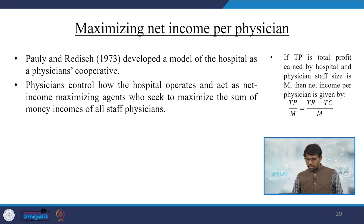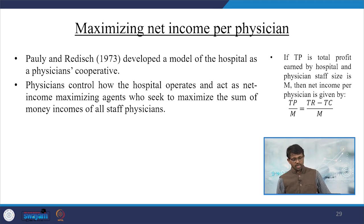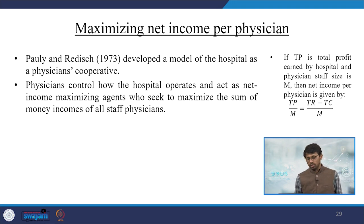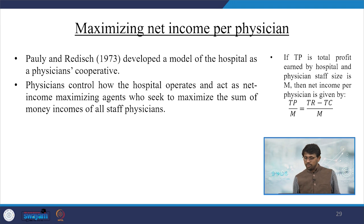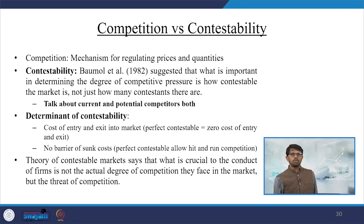Another approach is maximizing net income per physician. Pauly and Redisch (1970) developed a model of the hospital as a physician's cooperative, where physicians control hospital operations and act as net income maximizing agents, seeking to maximize total income across all staff physicians. If TP is total hospital profit and M is physician staff size, then average profit per physician = TP / M = (TR − TC) / M.